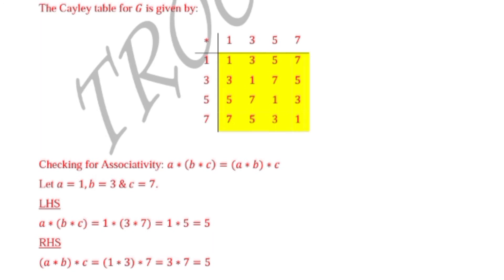Let A equal 1, B equal 3, C equal 7. We've just taken three elements from our header row or header column.